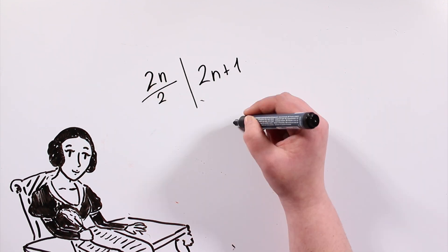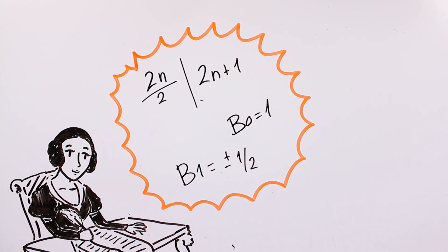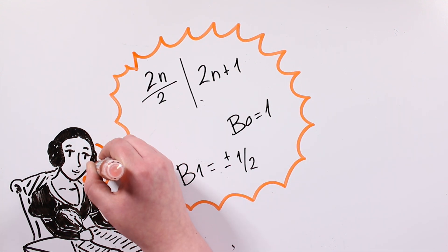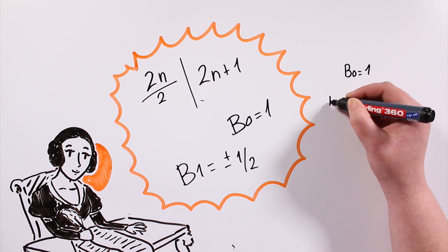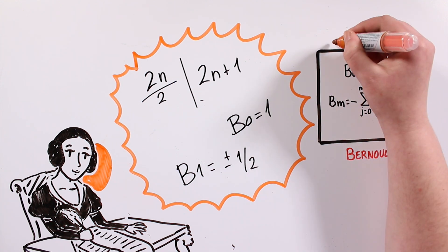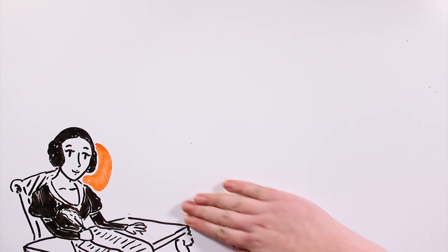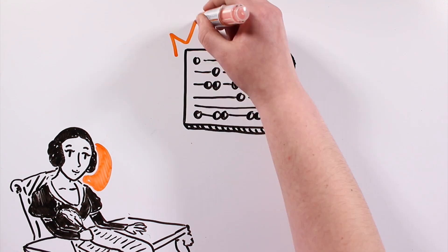Ada described how codes could be created for the device to handle letters and symbols along with numbers. She also described concepts such as the loop and the subroutine. She wrote a program that allowed to calculate the values of Bernoulli numbers, and how to perform trigonometric operations that used variables with the machine. And also, she detailed the use of punch cards.